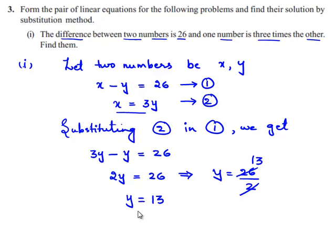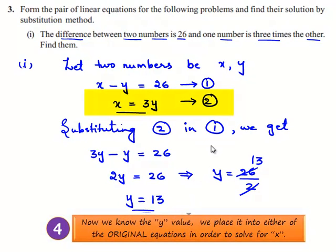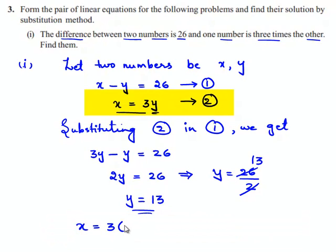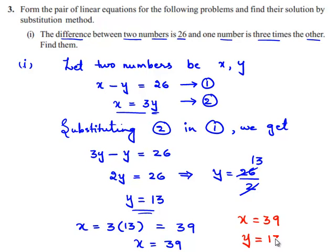Now substitute the value of y in equation number two. So this becomes x is equal to three times of y, which is 13. Three times of 13 is 39. Therefore x is equal to 39. So the solutions of the given linear equations are x is equal to 39 and y is equal to 13.